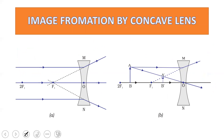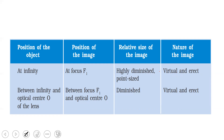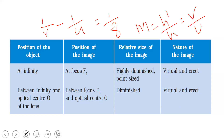Concave lens has two image positions, similar to the convex mirror. When the object is at infinity, you get a virtual, erect, diminished image at the focus. When the object is placed anywhere between infinity and the optical center, the image forms between the focus and the optical center — virtual, erect, and diminished. The lens formula is: 1/V − 1/U = 1/F. Note the difference from the mirror formula, which uses 1/V + 1/U. For magnification with a lens: M = H'/H = V/U (without the negative sign, unlike the mirror formula).